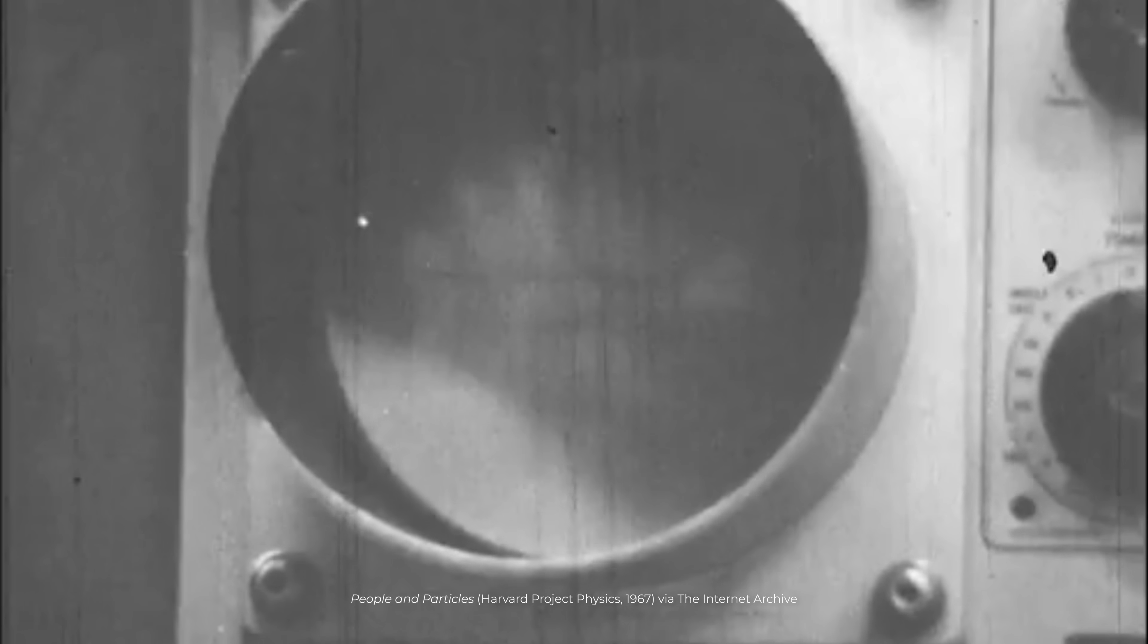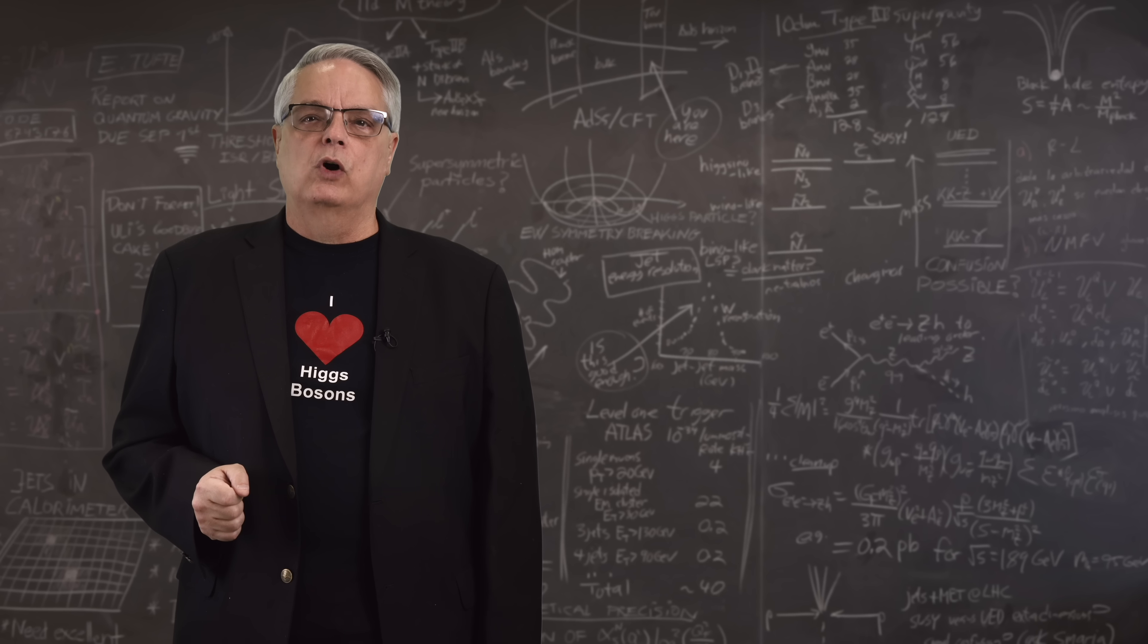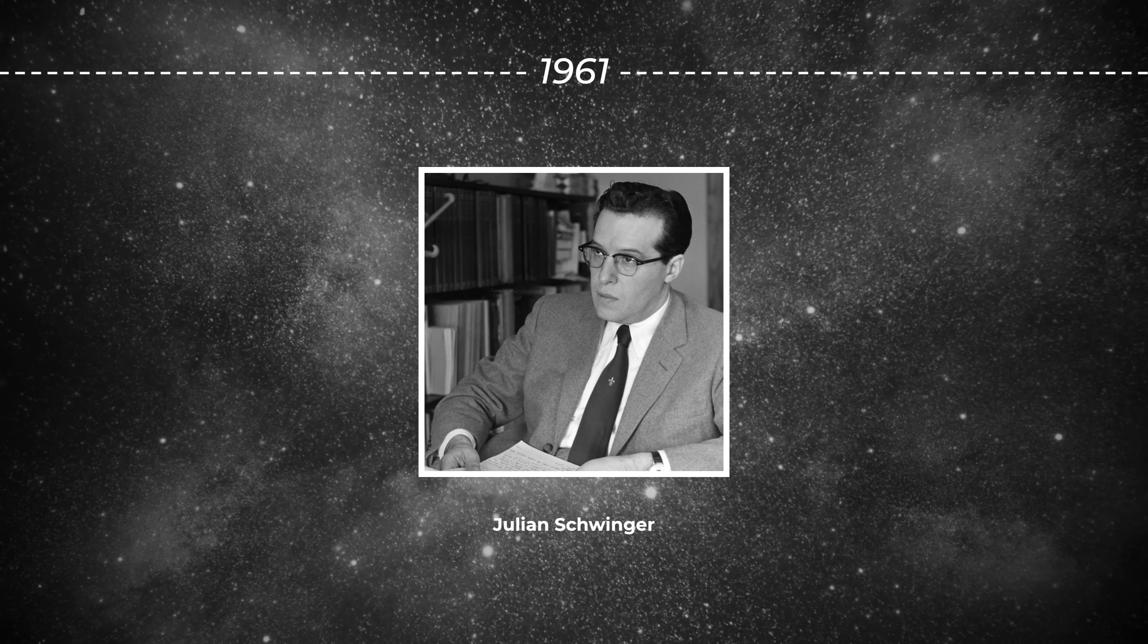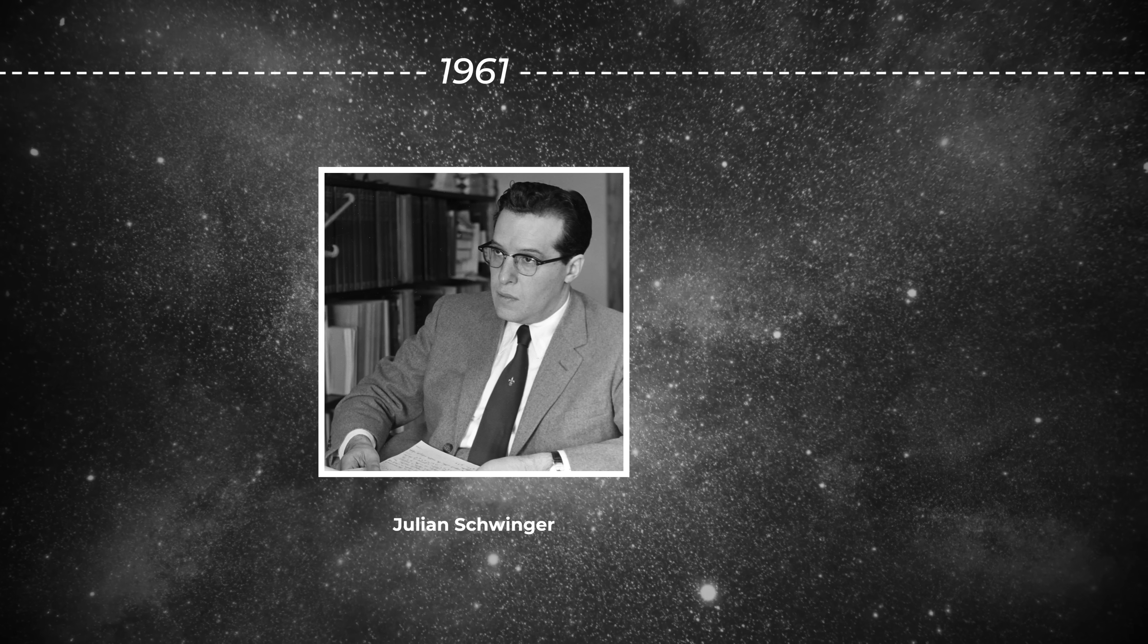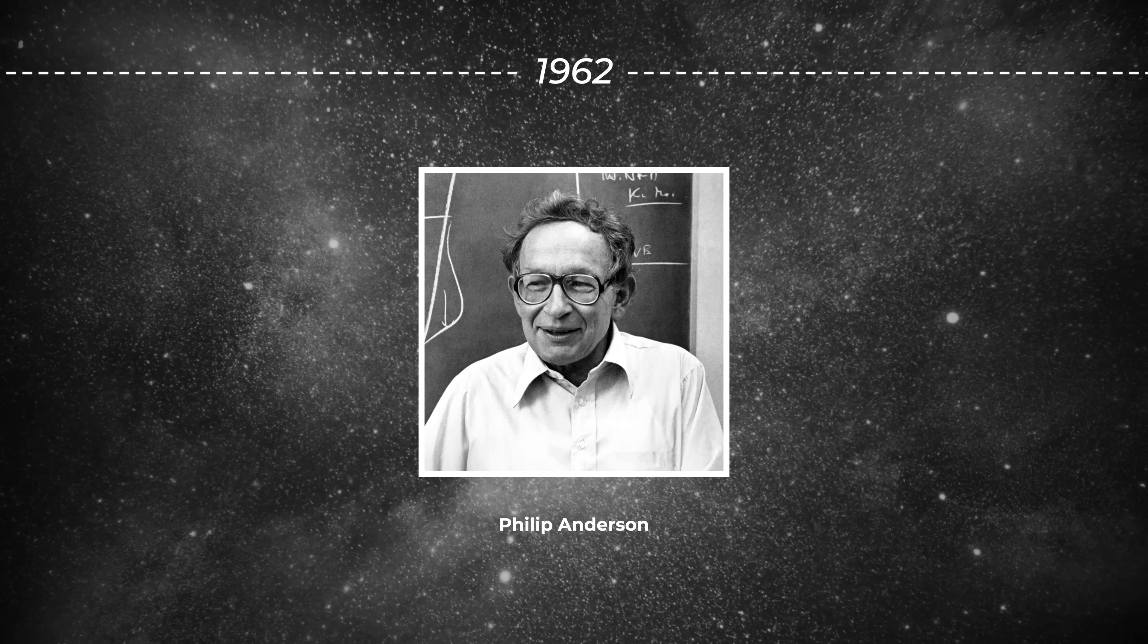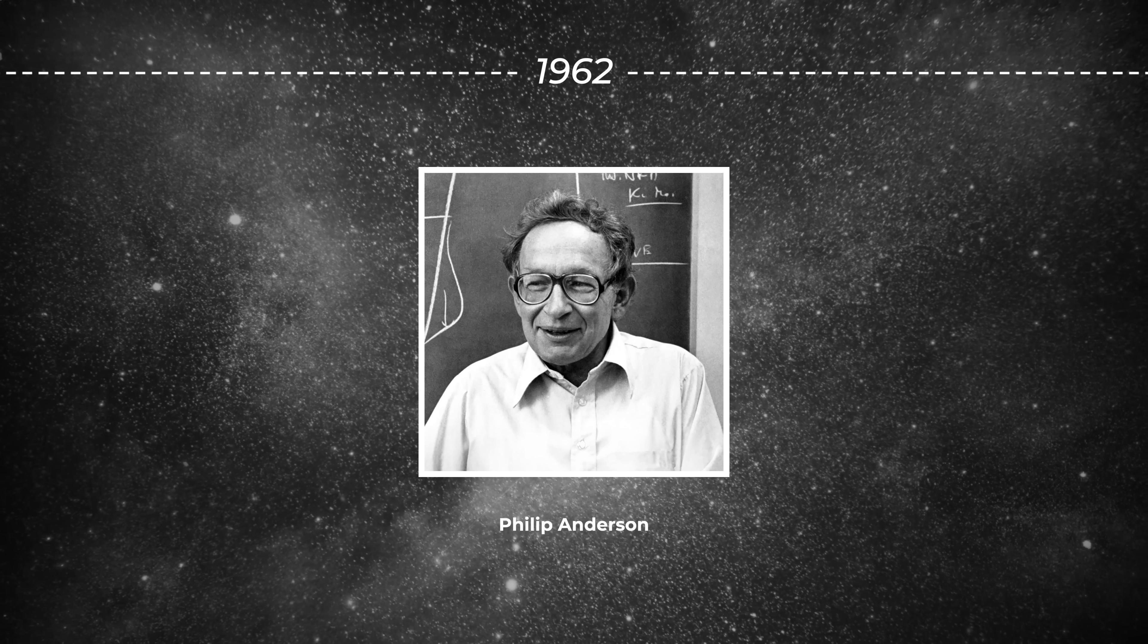Physicists were trying to figure out how to make the fields quantized. Essentially, they were trying to figure out how to include particles like photons in what are now called quantum field theories. The original work predicted that only massless particles would exist. This was done by Julian Schwinger back in 1961. The next year, Philip Anderson figured out a way to give particles mass, but his theory didn't include relativity.